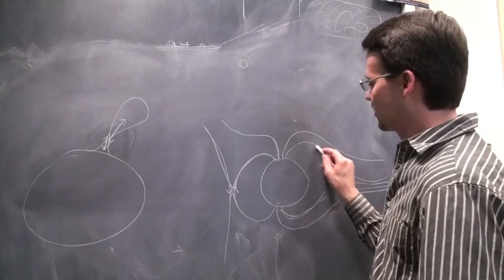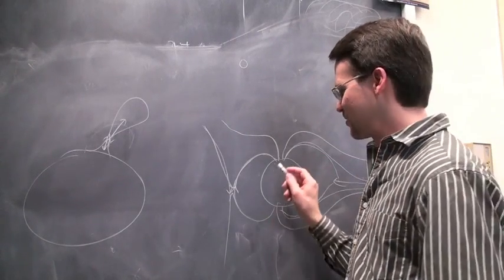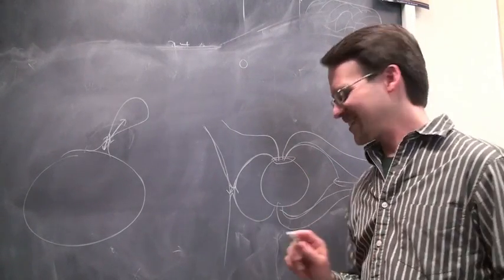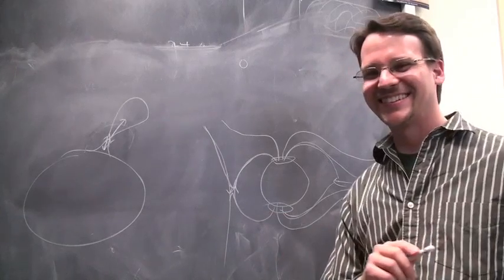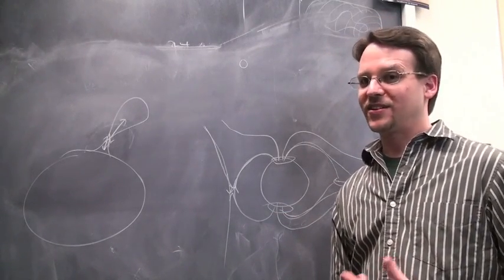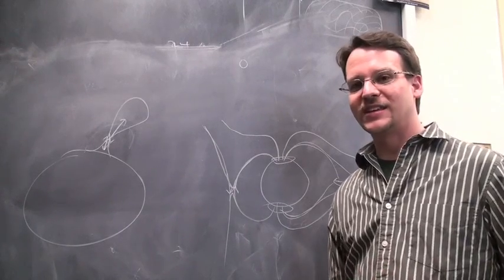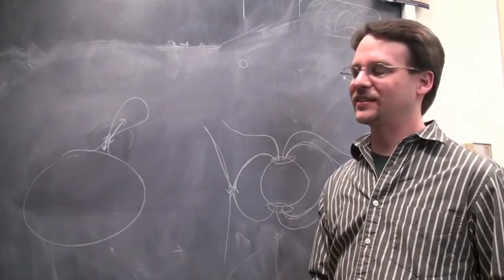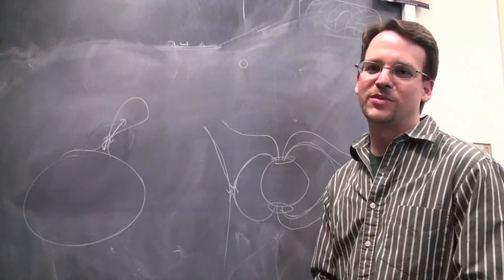This flow can come towards the earth and give you auroral signatures at the poles, but it can also interact with satellites up there and cause havoc. The topic of space weather is trying to predict when that happens so we can prepare for it.